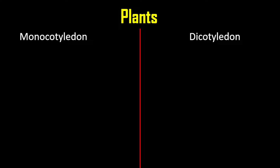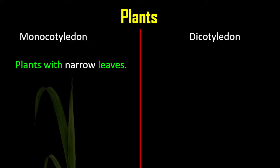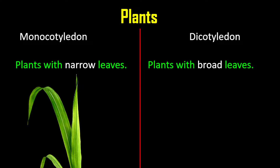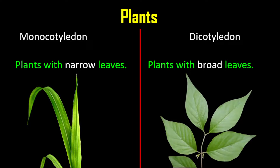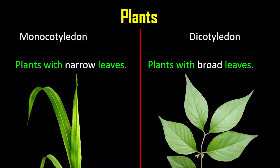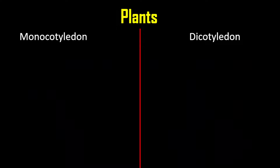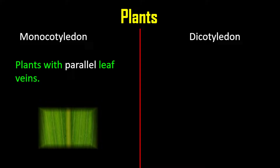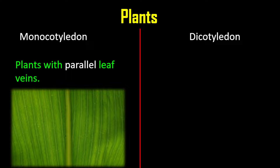For monocotyledon, they are plants with narrow leaves. Notice the blade or leaf of a grass — the leaf is narrow. Dicotyledons are plants with broad leaves; look at this typical plant with a very broad leaf. For monocotyledon, there are plants with parallel leaf veins. Notice that the veins within the leaf are running beside each other like highways or tracks.